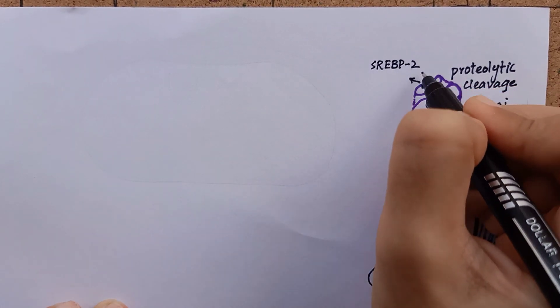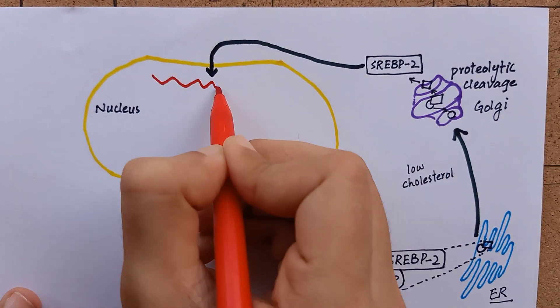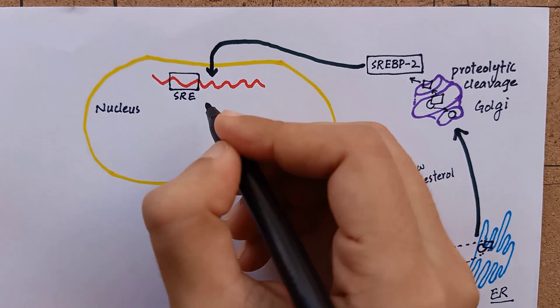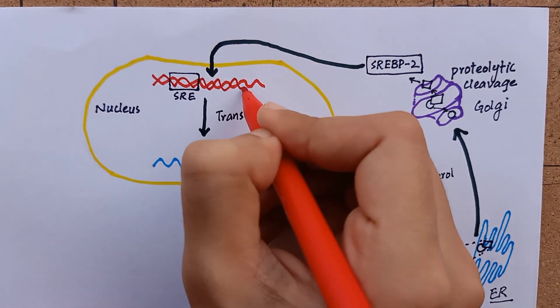The transcription factor SREBP2 enters the nucleus where the sterol regulatory element of SREBP2 binds to the DNA and the normal process of protein synthesis starts.